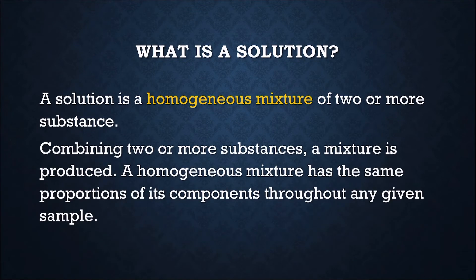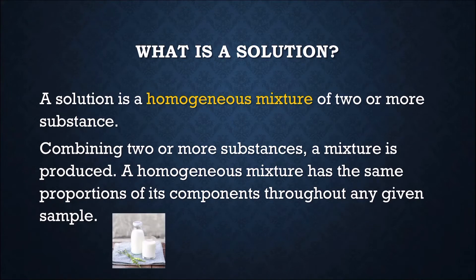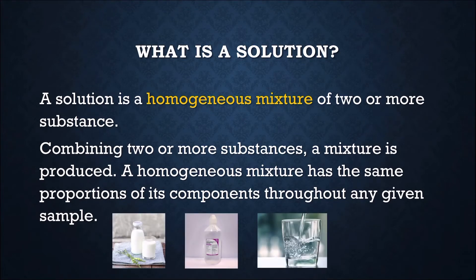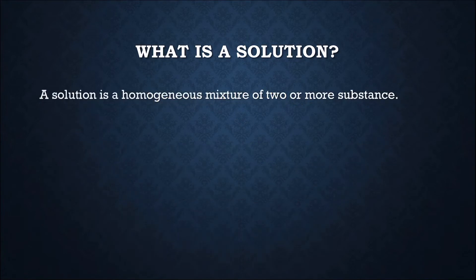We know that when combining two or more substances, a mixture is produced. But a homogeneous mixture is a type of mixture that has the same proportions of components throughout any given sample, which means it has uniform composition. Some examples are milk, saline solution, and water. Let's come back to the definition of solution.